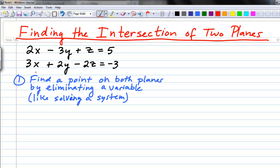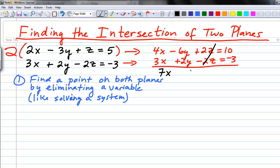So first thing, number one, we need to find a point on both planes. The way we're going to do that is by eliminating a variable in these two equations, similar to when you solve a system of equations. We can look at the variables and decide which would be easiest to eliminate. It appears that z would be pretty easy if we multiply the first equation through by 2.